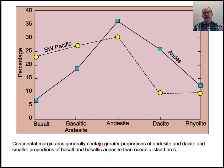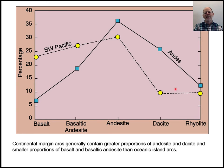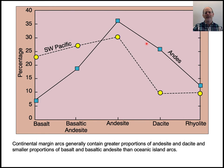Continental arcs do have more silicic components. In the Andes — from which andesite is named — the dominant rock is andesite, but you see a lot more dacite and rhyolite than in ocean-to-ocean island arc volcanic systems. You tend to get more mafic components in island arc systems and more felsic components in continental arcs.